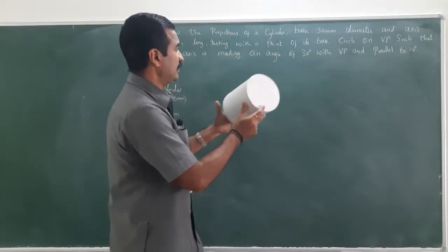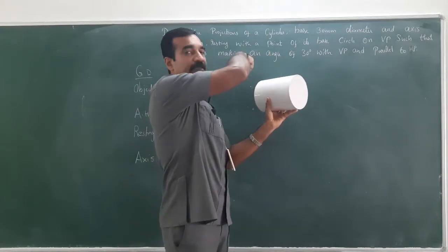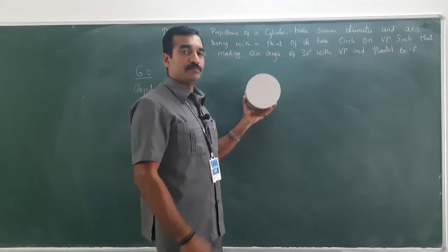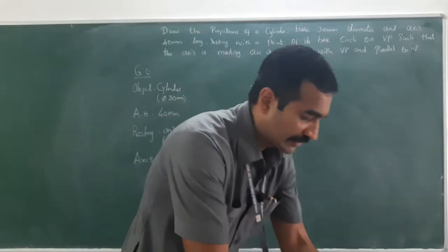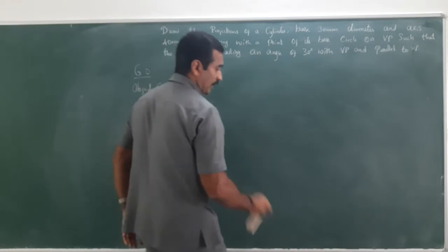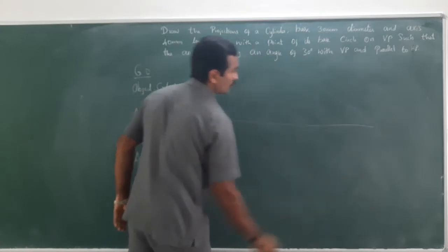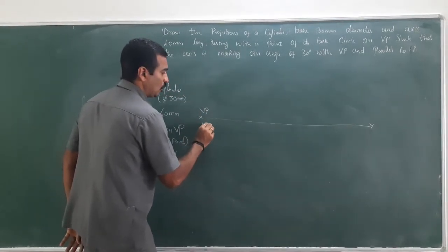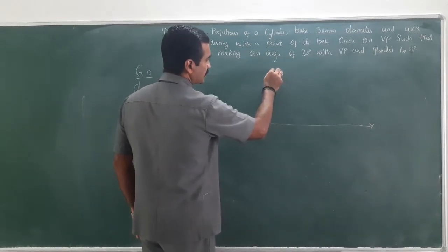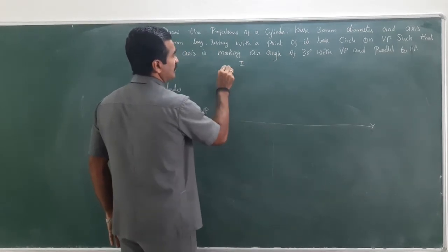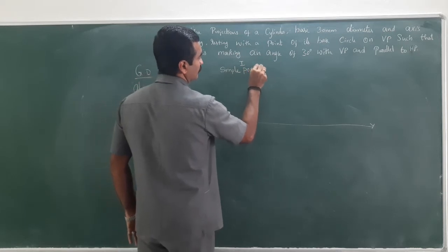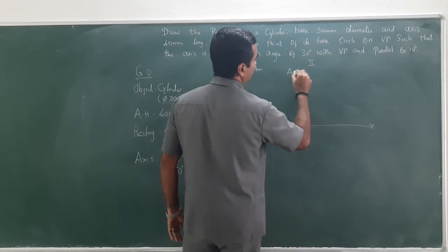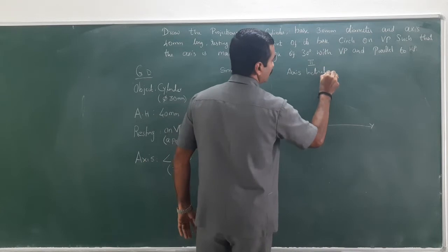In the final view, the object is making 30 degrees with VP, so we cannot draw the true shape directly in that position. Therefore, for Stage 1, the axis becomes perpendicular to VP so you can see the circular cross section. Draw the XY line, which represents the reference line or ground line. Above XY is VP, below is HP. There will be two stages: Stage 1 is the simple position or simple resting, and Stage 2 is the axis inclination or final position.